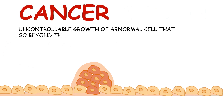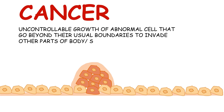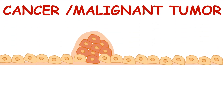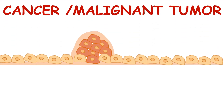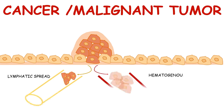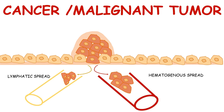Similarly, cancer is an uncontrollable growth of abnormal cells that go beyond their usual boundaries to invade other parts of the body and spread to distant organs. Thus, the terms cancer and malignant tumor can be used interchangeably. The spread of a malignant tumor or cancer can occur through either the lymphatic or the hematogenous system.